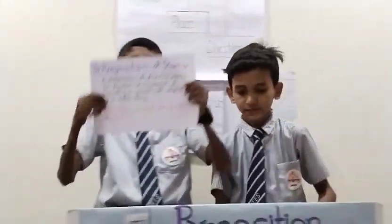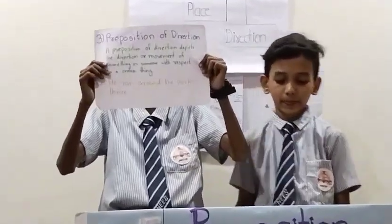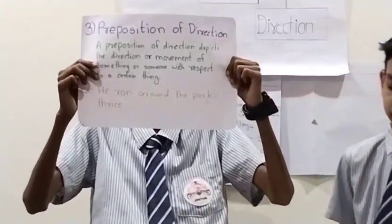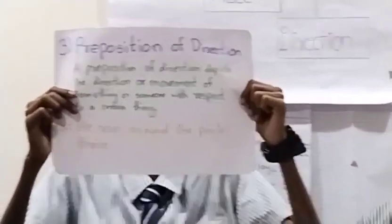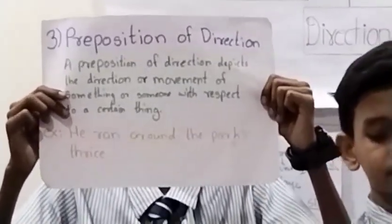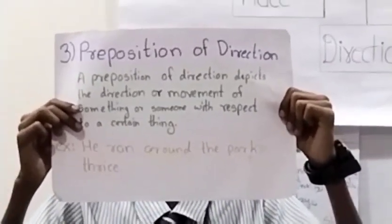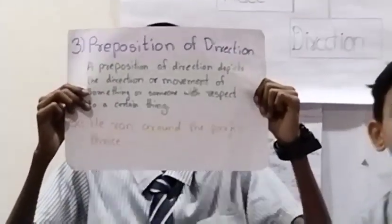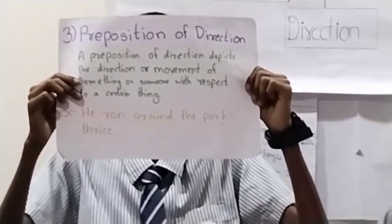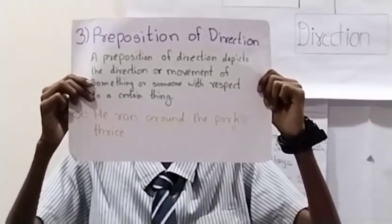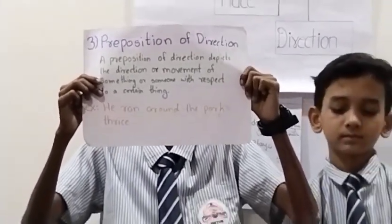Third, preposition of direction. A preposition of direction depicts the direction of movement of something or someone with respect to certain things. For example,